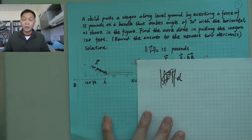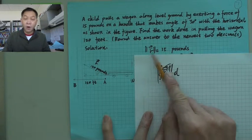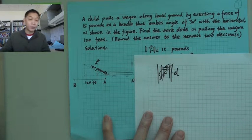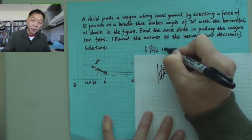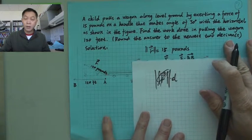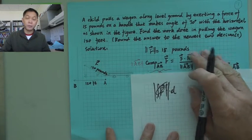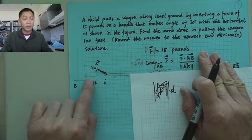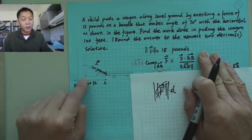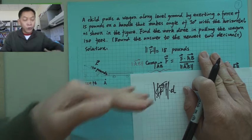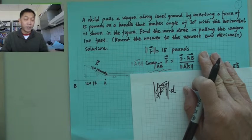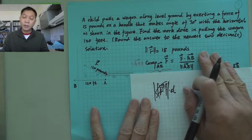The projection of the force onto the horizontal direction gives us the effective force. The magnitude of the force is 15 pounds, as given. We want to decompose this force and find its component in the horizontal direction, which tells us how far the force drives the wagon along the ground.